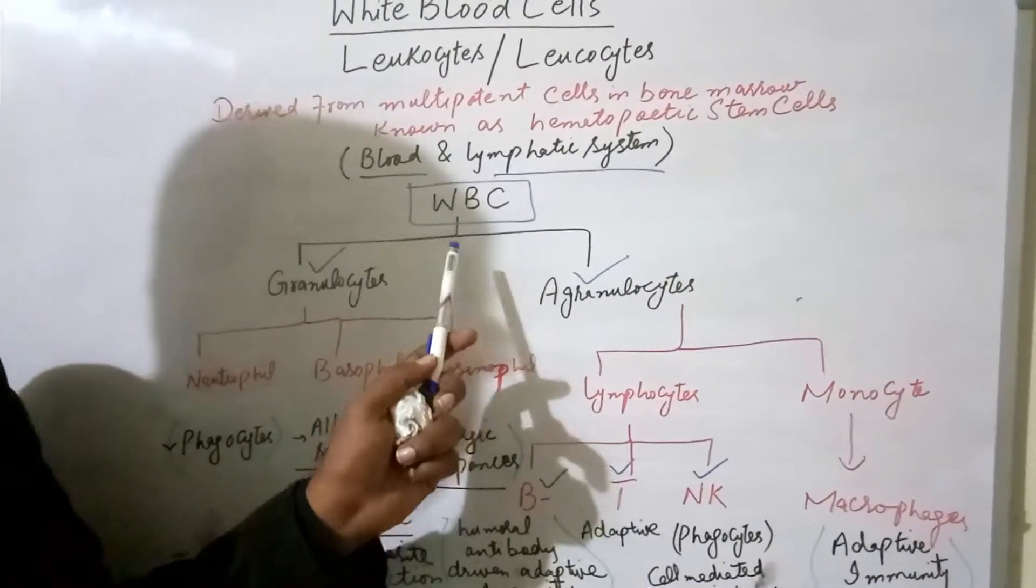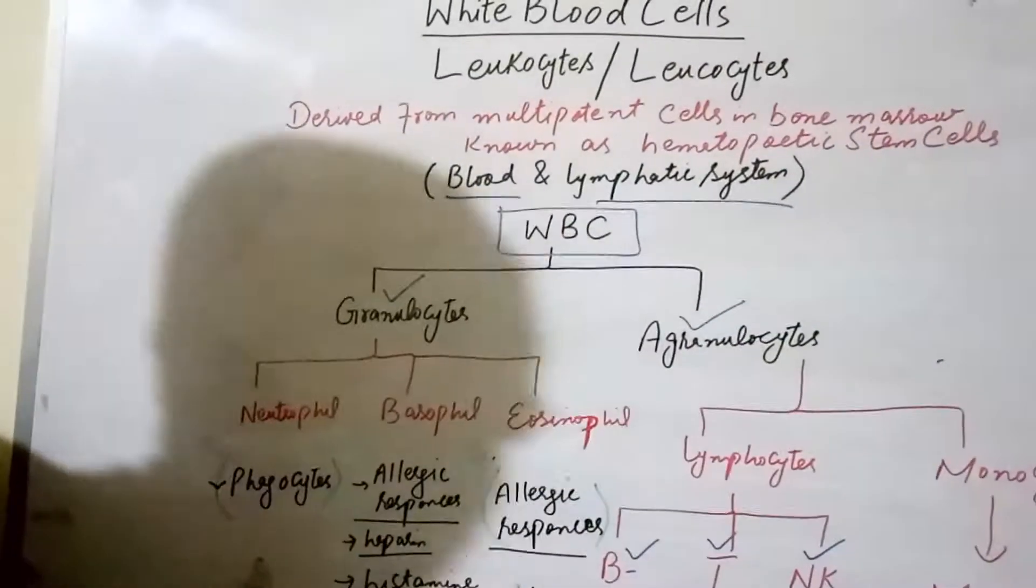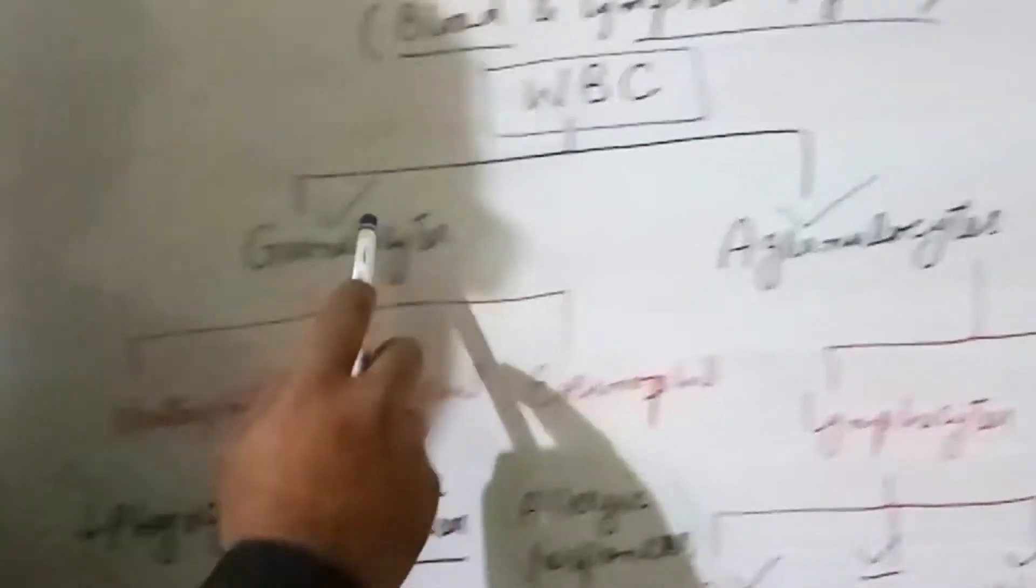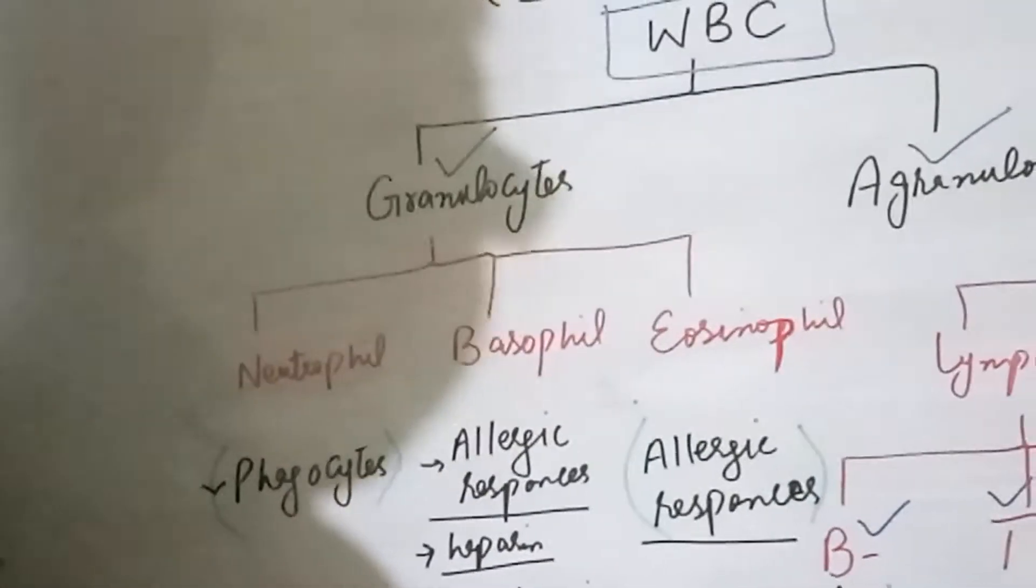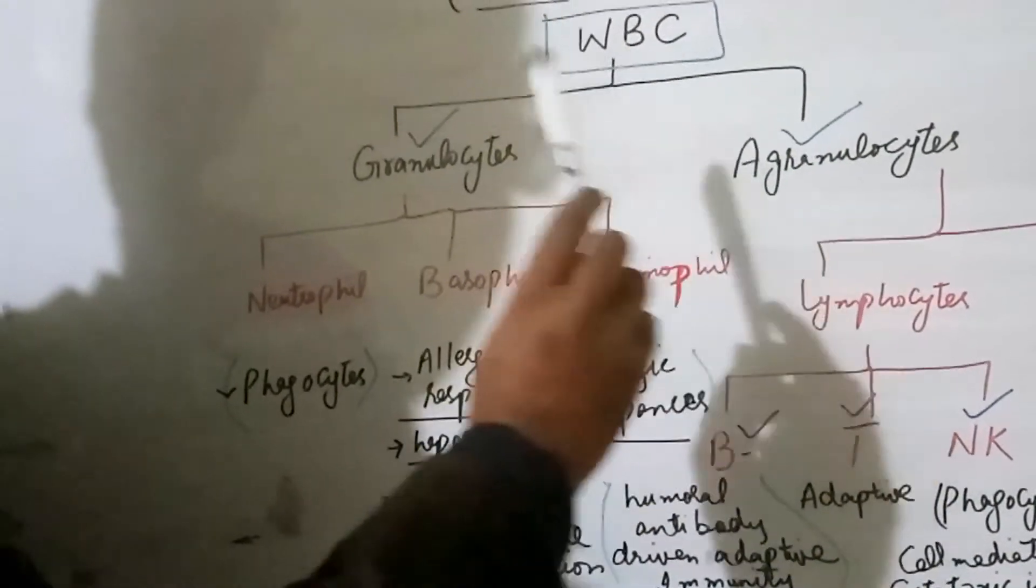There is a certain classification of white blood cells present. There are two types of white blood cells. First is granulocytes and second is agranulocytes. In granulocytes there is a presence of granules and in agranulocytes there is not presence of any sort of granules.